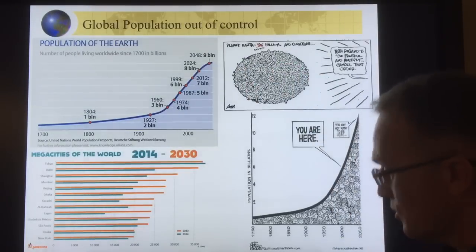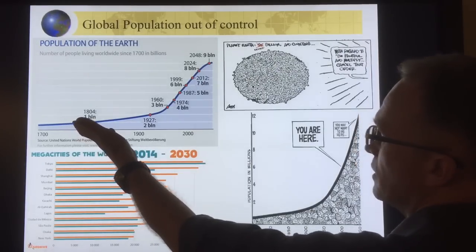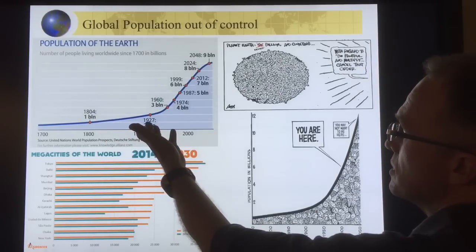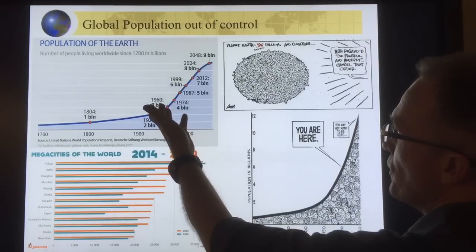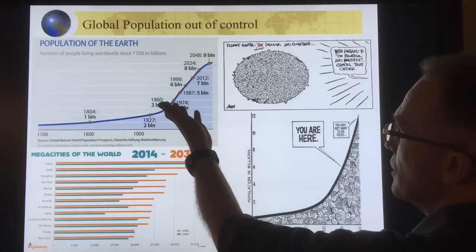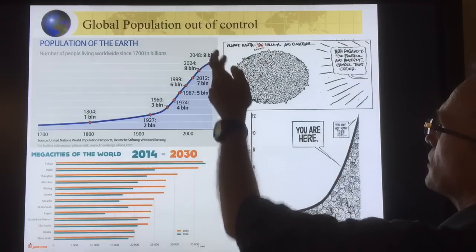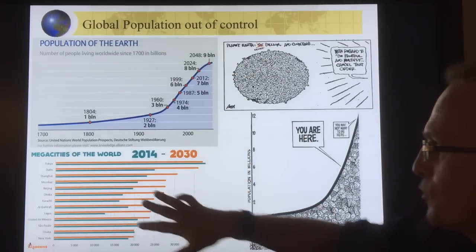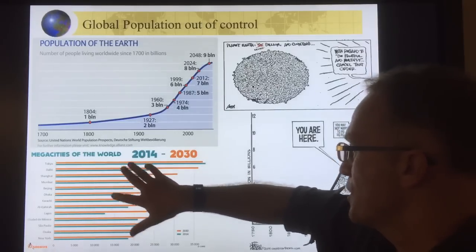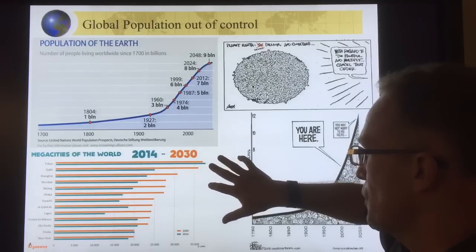The other major stress — the elephant in the room — is that global population is out of control. Around 1800 we had 1 billion people. It doubled in 123 years, then added another billion in 33 years, then another billion in 14 years, and the gap keeps getting smaller. We're at 7.5 billion and projected to go much higher. The mega-cities of the world show significant growth expected from 2014 to 2030.